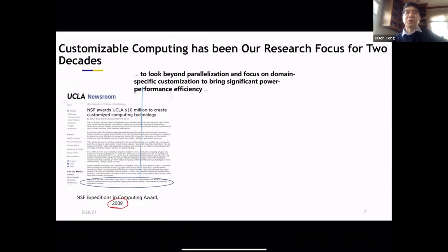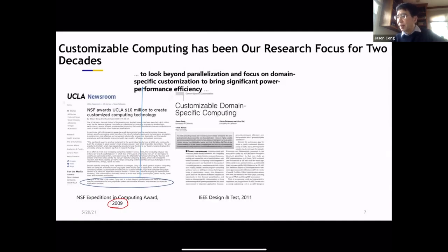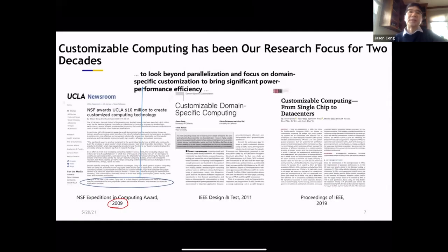And later on, we're also expanding to genomics acceleration and others. And so we have a number of articles that summarize our research results. The most recent one was in IEEE proceedings two years ago. So we talk about acceleration at the multiple levels, single chip, at the server level, and the data center level. So I'll give you some flavor of that.